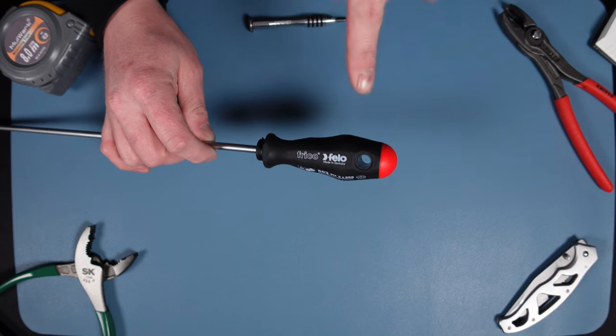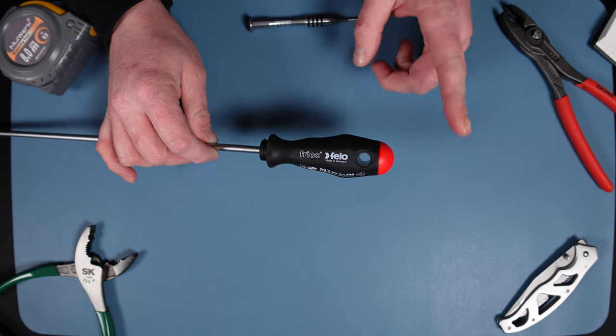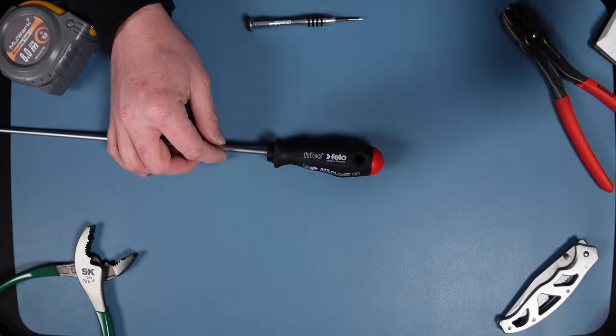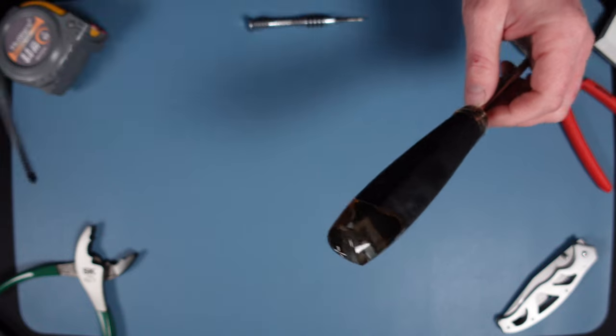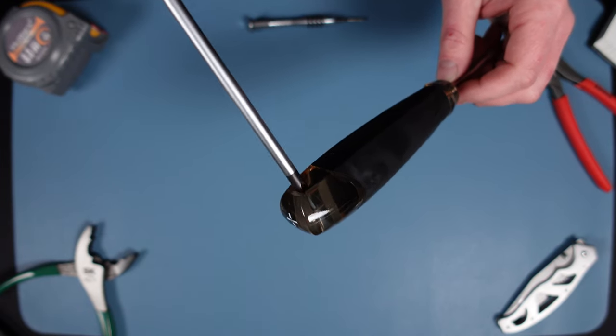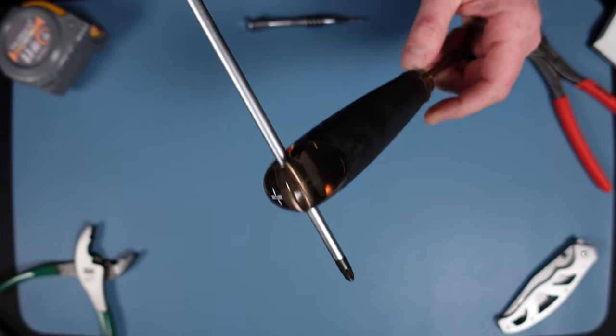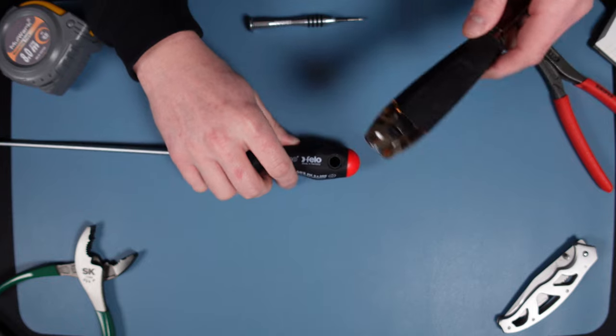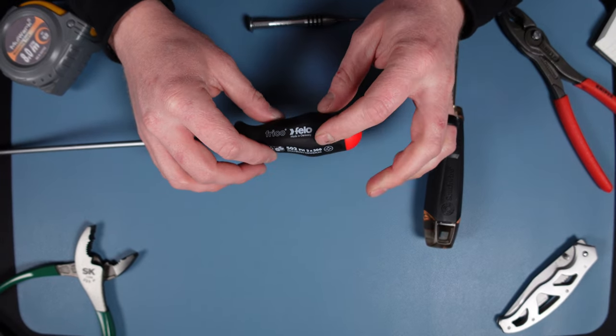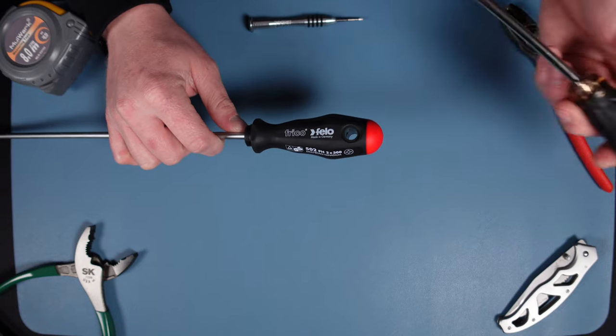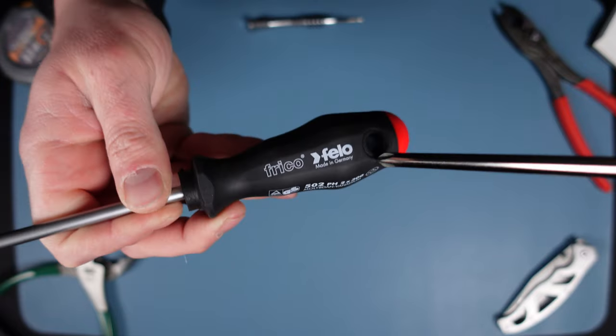Now this one, unlike the wood handle, does have a pass through so you can hang the screwdriver. Most screwdrivers when you see a pass through, they're strong enough to allow you to pass another screwdriver through and use it to apply more torque to a fastener.